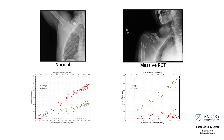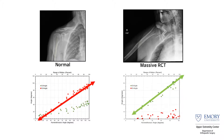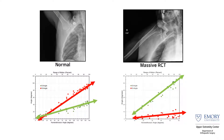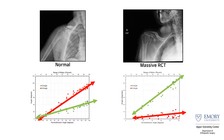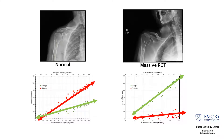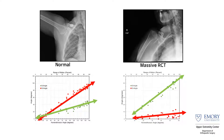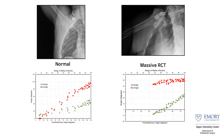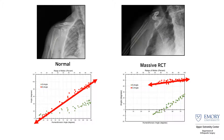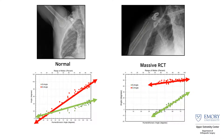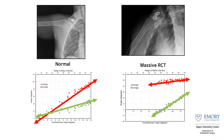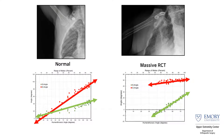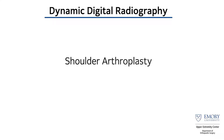Massive rotator cuff tears are another easy application. You can see not only subluxation of the humeral head, but when you look at the glenohumeral joint compared to the scapulothoracic motion in normal controls, the glenohumeral angles show very minimal motion compared to dramatic scapulothoracic compensation. Another patient shows a very flat glenohumeral angle and a dramatic increase in scapulothoracic motion — illustrating how much these patients compensate, and how they can trick you into thinking they have more motion than they actually do. It's really their scapula giving them that motion.